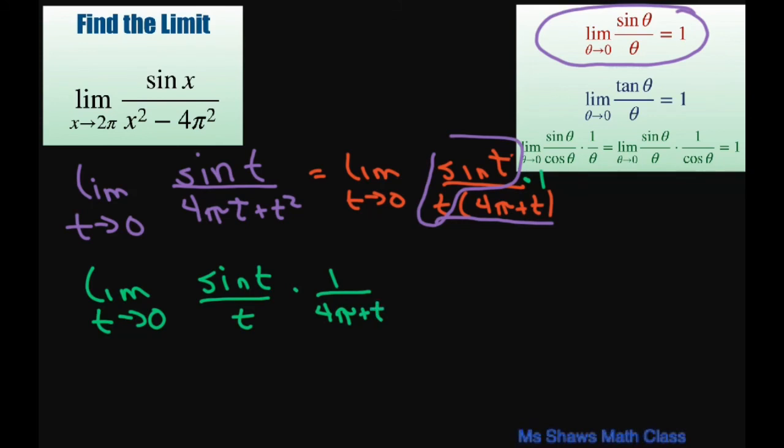All right, so as t goes to 0, we know this equals 1, and that was our goal. So now we have 1 times 1 divided by 4π.